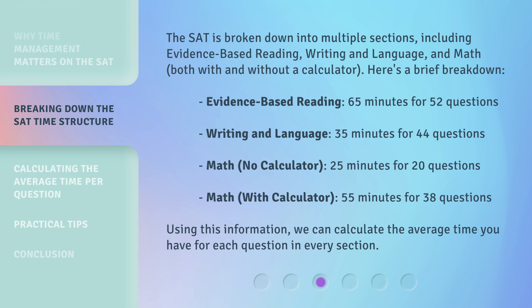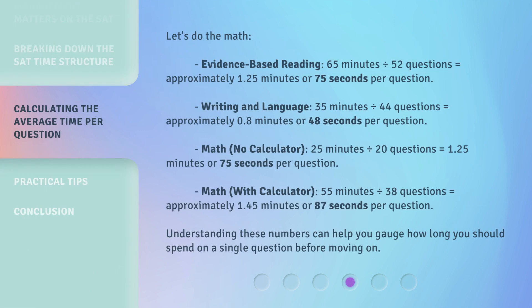Using this information, we can calculate the average time you have for each question in every section. Let's do the math. Evidence-based reading: 65 minutes divided by 52 questions equals approximately 1.25 minutes, or 75 seconds per question. Writing and language: 35 minutes divided by 44 questions equals approximately 0.8 minutes, or 48 seconds per question. Math, no calculator: 25 minutes divided by 20 questions equals 1.25 minutes, or 75 seconds per question. Math, with calculator: 55 minutes divided by 38 questions equals approximately 1.45 minutes, or 87 seconds per question.